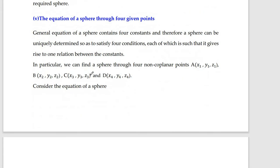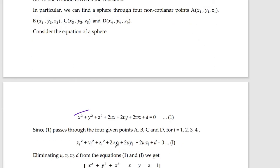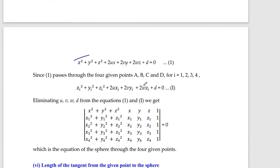If we are given four points, we need to find the equation of the sphere passing through them. We consider the general equation and substitute each of the four points into it, giving us four equations of the form: xᵢ² + yᵢ² + zᵢ² + 2uxᵢ + 2vyᵢ + 2wzᵢ + d = 0, where i = 1, 2, 3, 4. Combining with the general equation gives us five equations total.